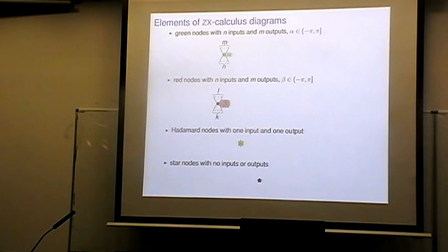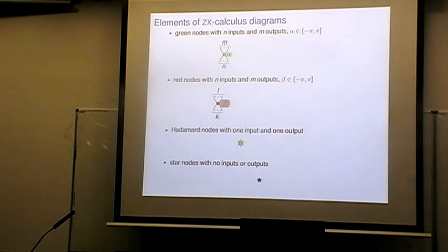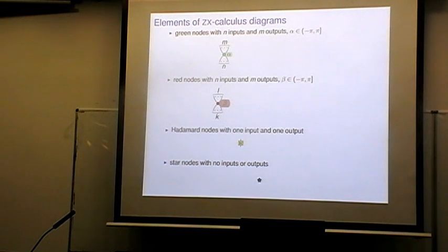As in the previous talk, the ZX calculus consists of two red and green spiders — the green spiders being maps in the computational basis and the red spiders maps in the Hadamard basis. We also have two extra nodes: the Hadamard nodes, which map between the two bases, and star nodes, which are just numbers with no inputs or outputs.